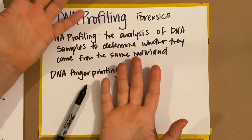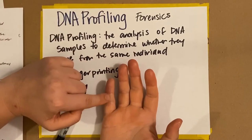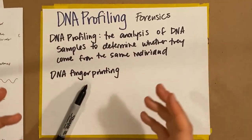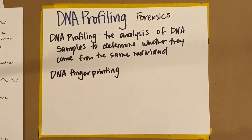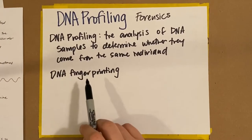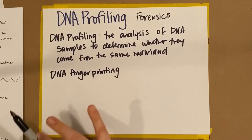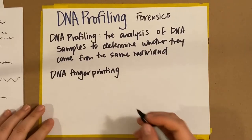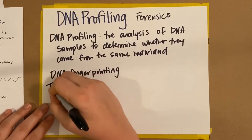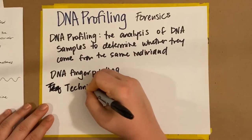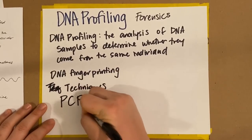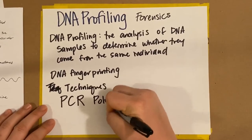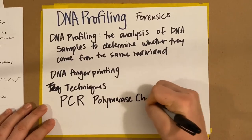That's why they use fingerprinting for crimes as well. The DNA fingerprint is going to be a unique signal that we'll be able to use. In order to do DNA profiling and DNA fingerprinting, it requires a couple of different DNA technology techniques. One of the big techniques is called PCR, which stands for polymerase chain reaction.